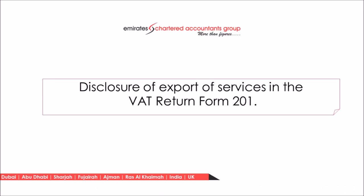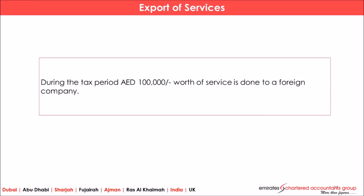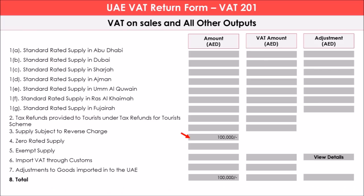Now let us see how the export of services is disclosed in UAE VAT return form number 201. For example, if 100,000 worth of services are provided to a foreign company during the period, that is an export of services. In this case, box number 4 will show the value of export — that is 100,000 — but the tax element will not be disclosed because it is zero rated.